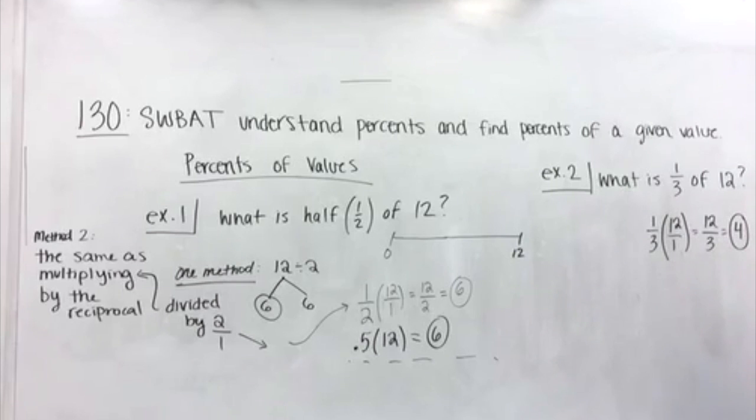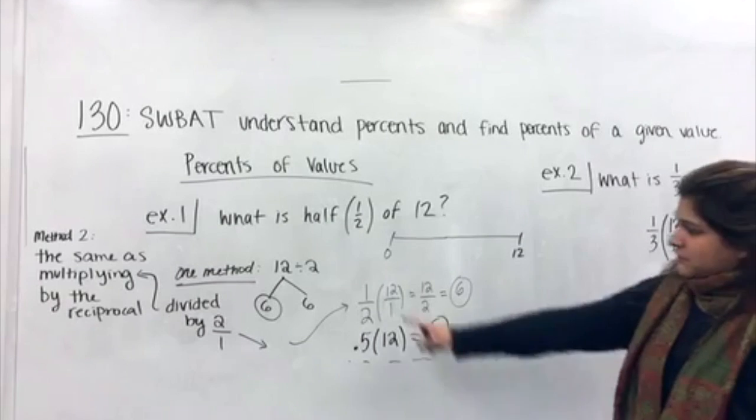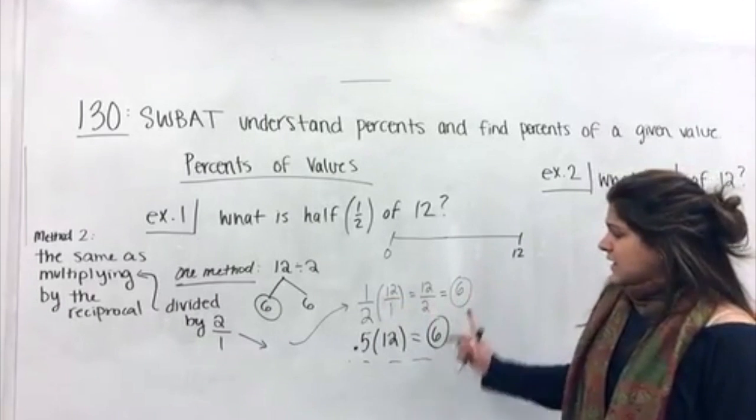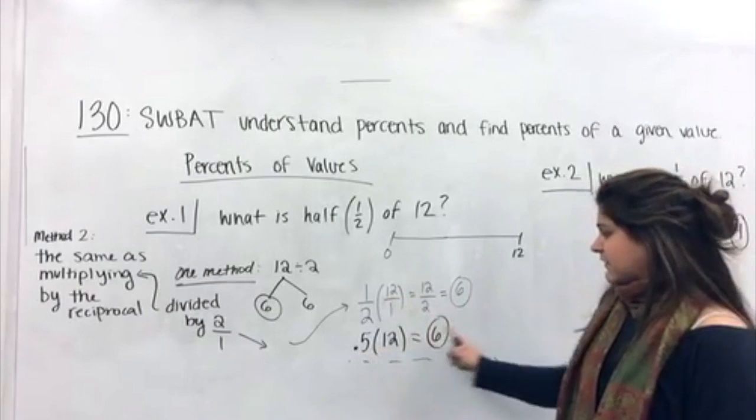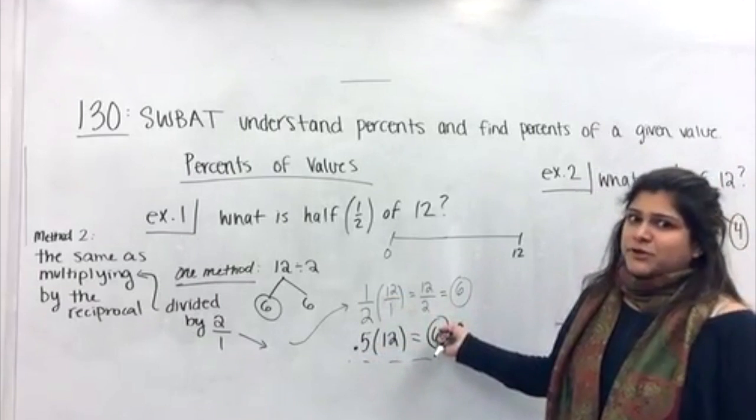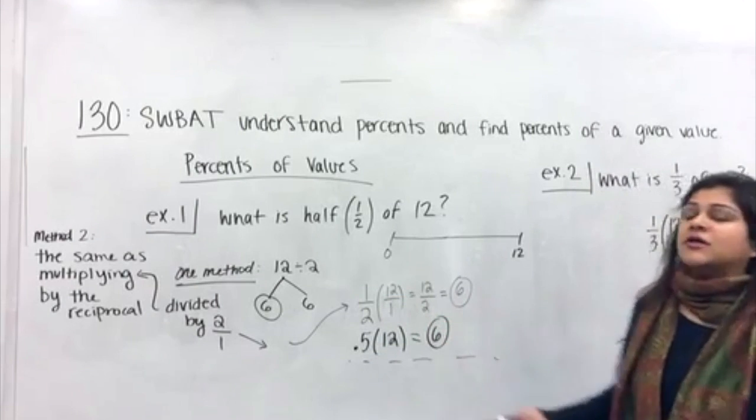Again, write that as a fraction. We have one times twelve is twelve. Three times one is three. Twelve divided by three, we would get four. So, here, if I try to convert one-third into a decimal, that would be a little bit challenging. Here, I'm like, one-third, it would be .3 repeating. There's no way of writing it, so you want to leave it as a fraction. So, if we know how to multiply fractions with values to find the result, and we know how to multiply decimals by the value to find the result, well, we can do the same thing with percents, because we know they're all the same thing.